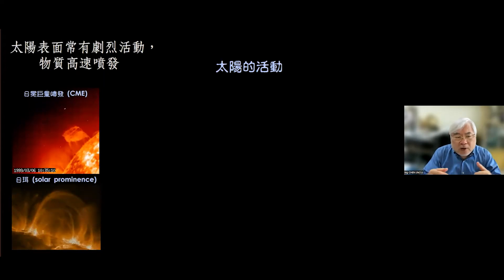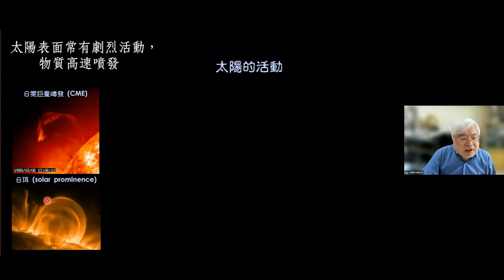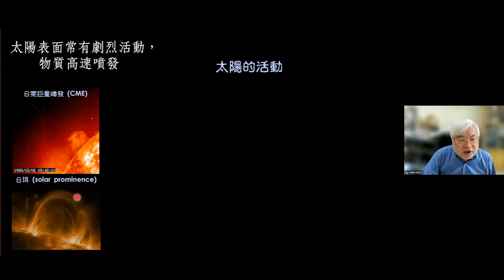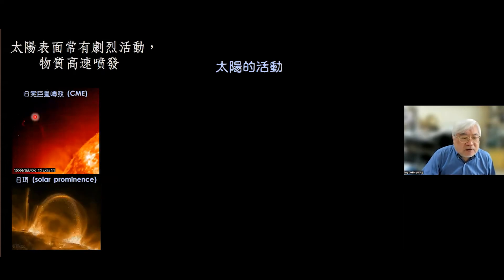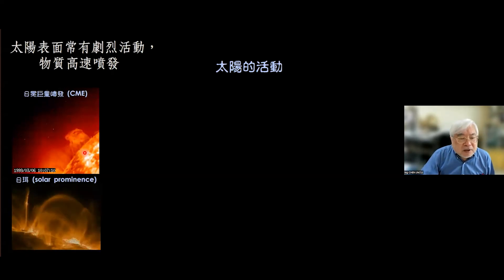能量出来的地方温度比较高，比较亮，明亮的白色部分把能量丢出去以后又下沉，就变得比较暗的部分，这就是米粒组织。太阳表面是一团气体，有磁场有高温，所以有的时候物质会沿着磁力线被抛射出来，我们就看到了磁场的结构。有些物质被抛射出来以后不再掉回太阳，而向太空喷发出去。这样的结构看起来好像太阳表面挂了一个耳朵，所以叫日珥。